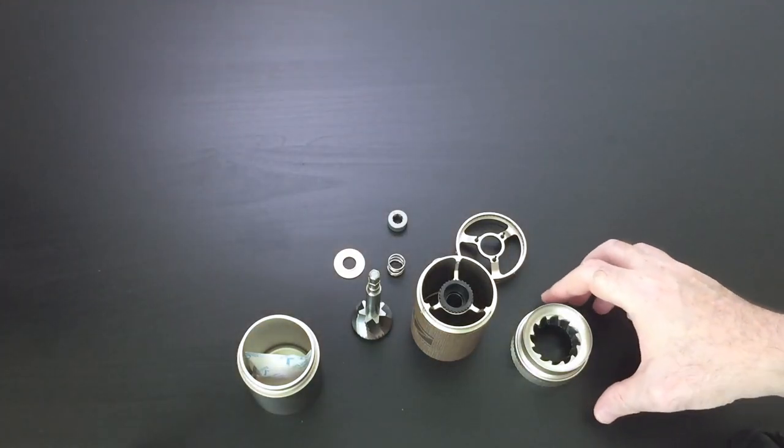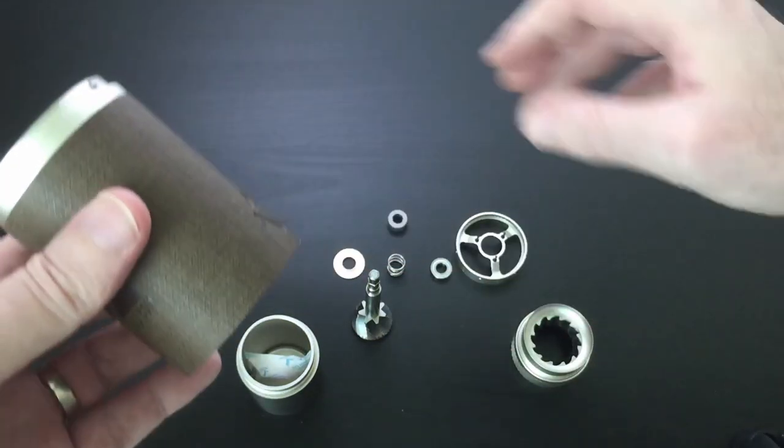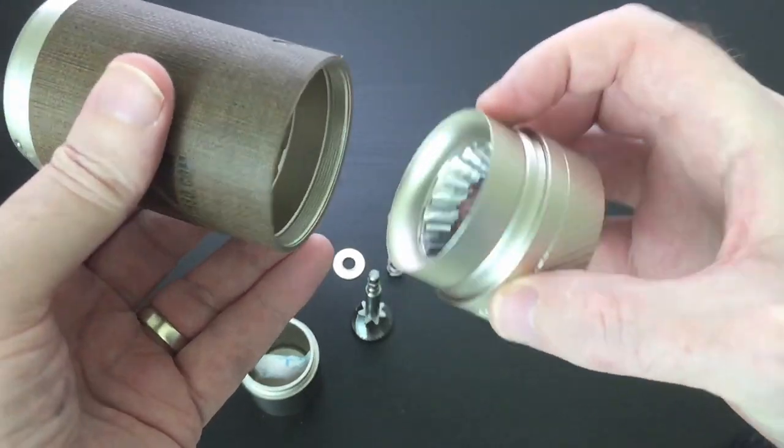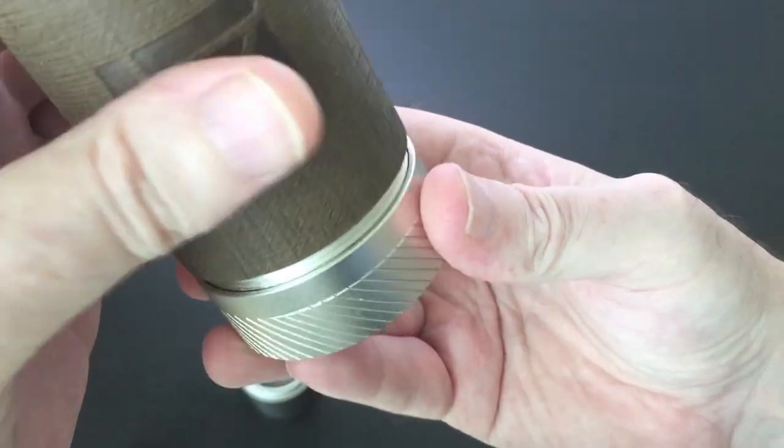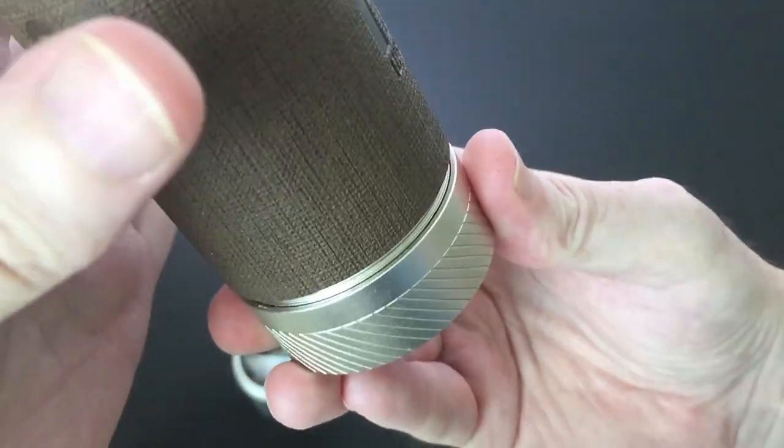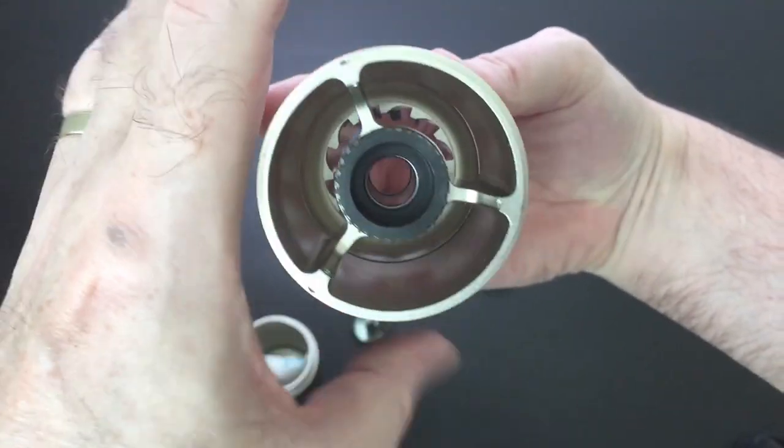Reassembling the grinder is just the opposite of what we've just done. Get your body, the outer burrs, put them in there. Again, be careful with your threads—you don't want to damage them. Then turn it anti-clockwise.